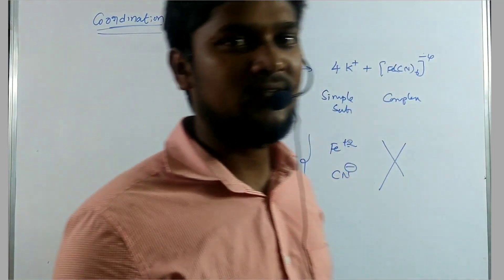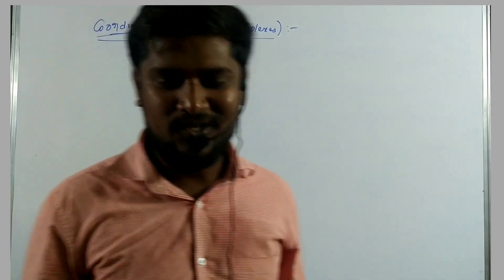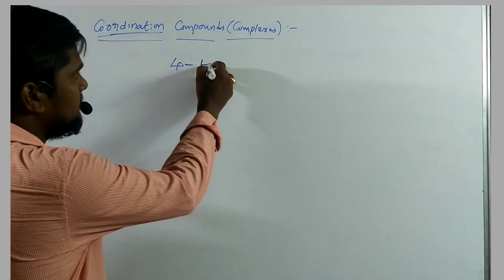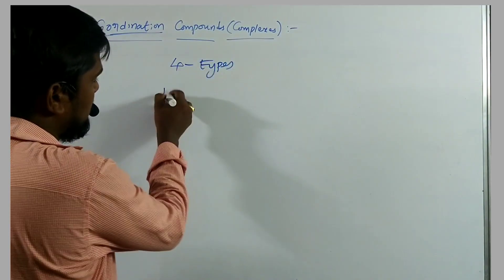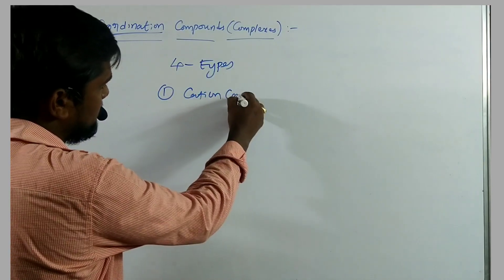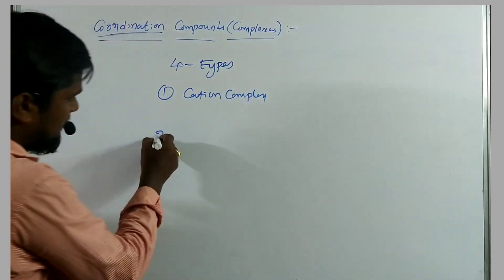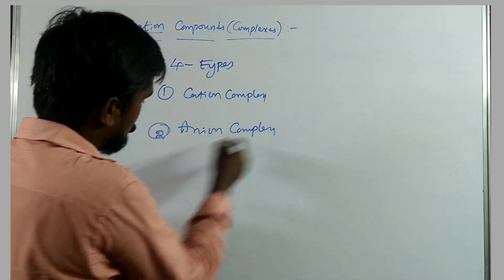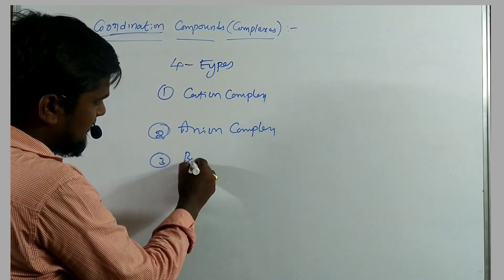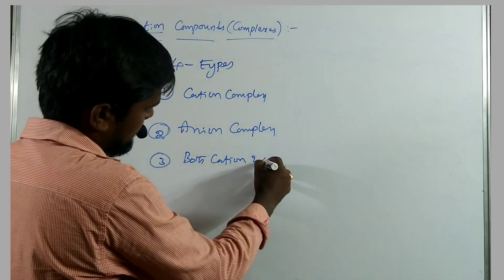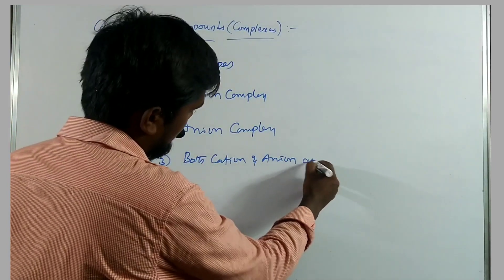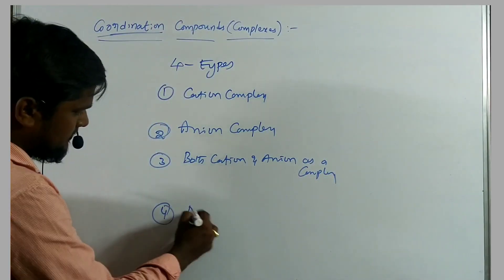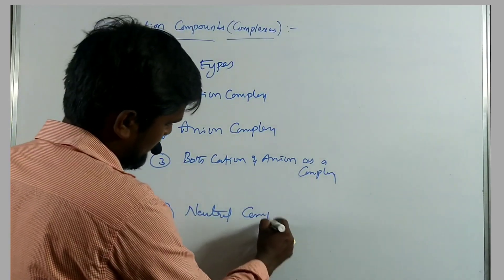Complex compounds generally appear in four types: the first one is cation complex, the second one is anion complex, the third one is both cation and anion as a complex, and the fourth one is neutral complex.